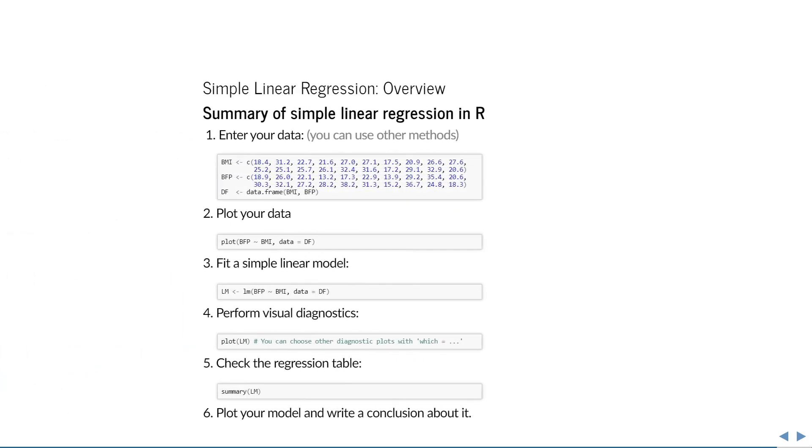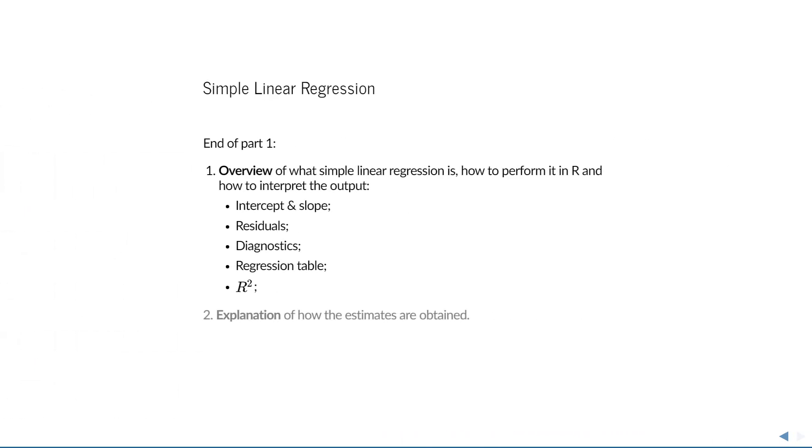In summary then, a typical analysis with simple linear regression works as follows. Enter your data, plot your data, fit a simple linear model, perform visual diagnostics, check the regression table, and report your conclusion, for which I recommend you include a plot of your model. So, and that concludes the first part of this series.